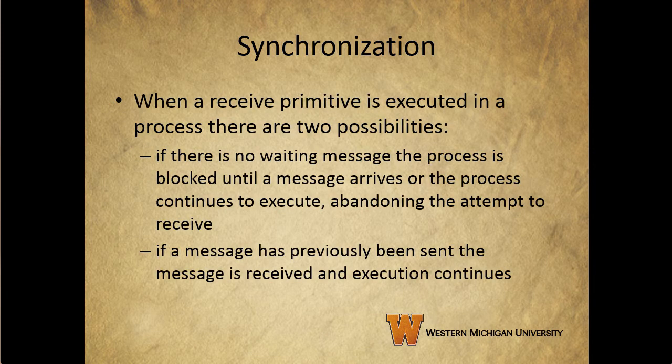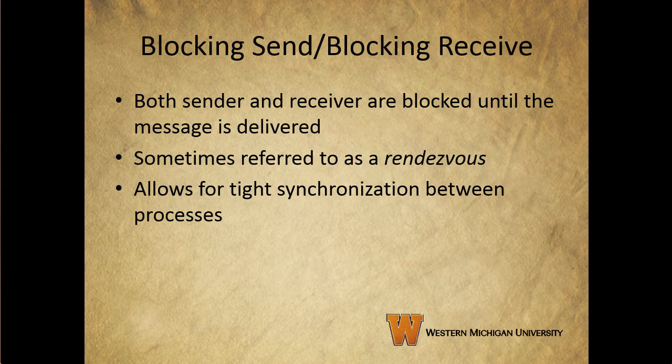When a receive primitive is executed in a process, there are two possibilities. If there's no waiting message, the process blocks until the message arrives, or the process can continue to execute and abandon the attempt to receive a message. If a message has previously been sent, the message is received and then execution continues. Both the sender and receiver can be blocking or non-blocking. Three combinations are common, although any particular system will usually have only one or two combinations implemented.